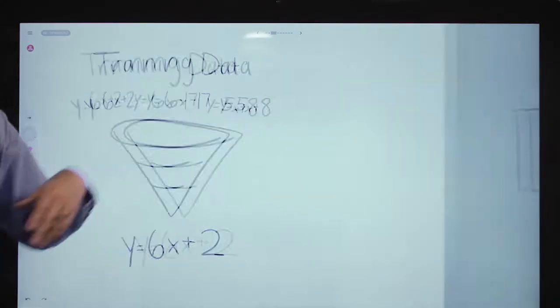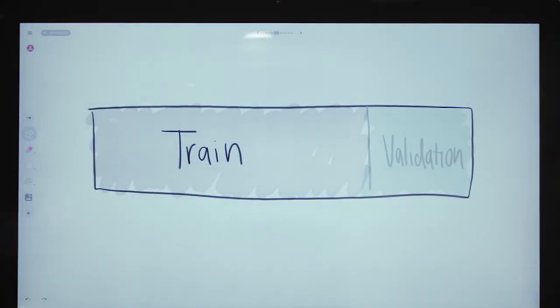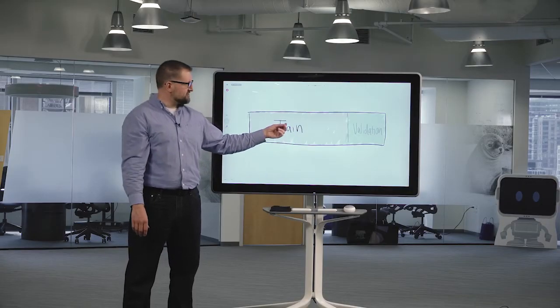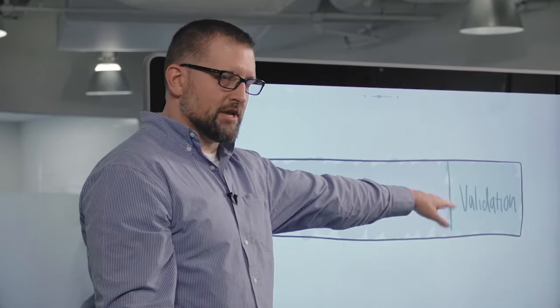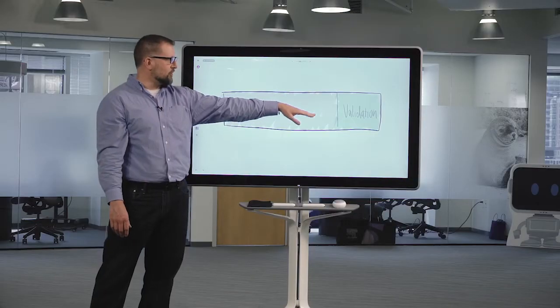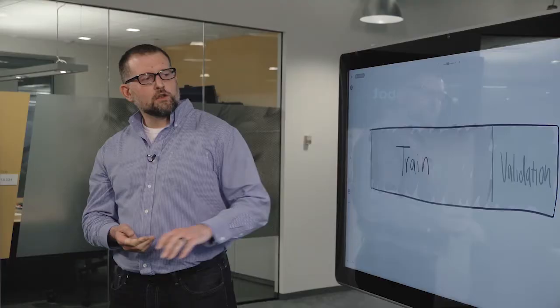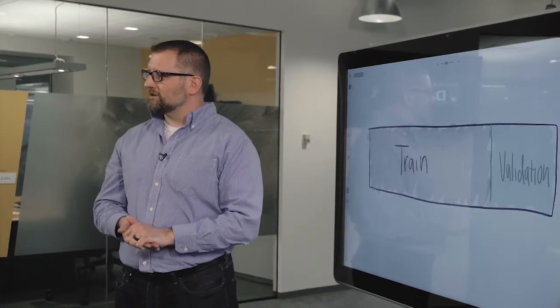What we're going to do is we're going to randomly split our data into two pieces. We fit our models using the training data. Now to see how that model actually performs we're going to make predictions over there on the validation partition and then we're going to see how good are those predictions. How well do they actually line up with the actual outcomes? Now this setup works really well if all you're doing is building one model.